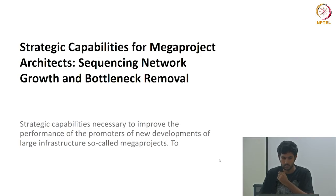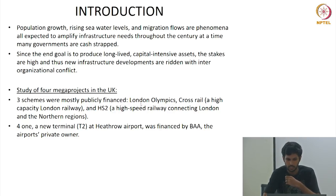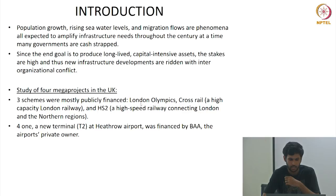We are going to look at the strategy and capability for mega project architecture. Mega projects are undertaken to produce long-lived, capital-intensive assets. The stakes are high, and thus infrastructure developments are rife with inter-organizational conflict. In this case study we are going to see four mega projects in the UK: the London Olympics, Crossrail, High Speed Rail connecting London and the north, and a new terminal at Heathrow Airport financed by BAA, the airport's private owner.